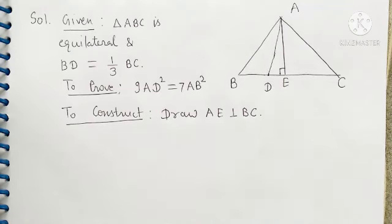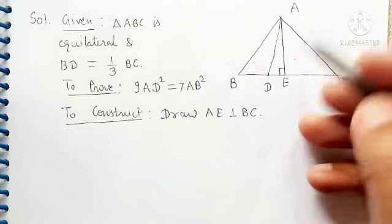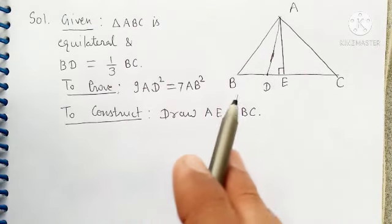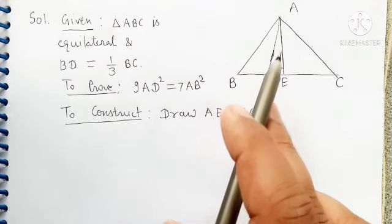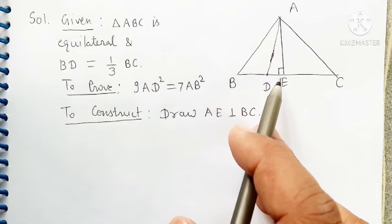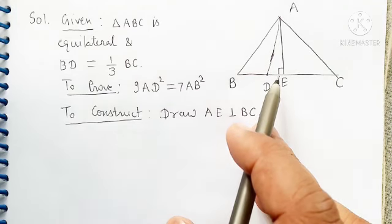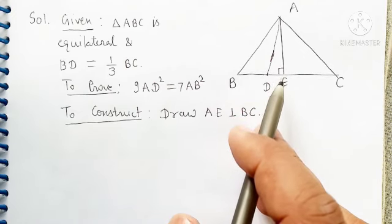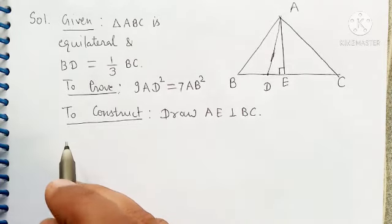Triangle ABC is equilateral, so AB is equal to BC is equal to AC. And we have to convert AD square, this AD square into AB square. So we can write AD square as AE square plus DE square. And we have to transform AE and DE into BC, then BC into AB.